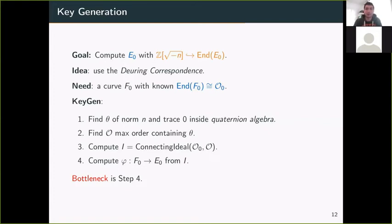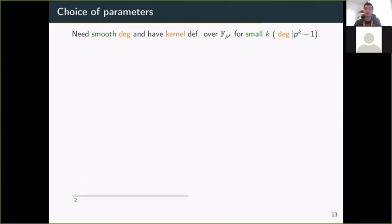Now that we have that in mind, we can go to parameter selection. A generic principle we must remember is that if we want isogeny computations to be efficient, we first need their degree to be smooth and have the kernel defined over Fp^k where k is small. This is equivalent to saying that the degree must divide p^(dk) - 1. So the goal is to find a prime p such that p^(dk) - 1 has a lot of smooth factors. The size of this smooth factor depends on the scheme we want to build.